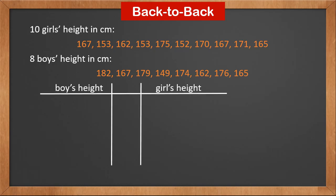First, let's draw 3 lines, put the title 'Girls' Height' on the right and 'Boys' Height' on the left. Then put all stems in the middle and the leaves for all girls on the right. Notice that we add new stems 14 and 18 for boys.